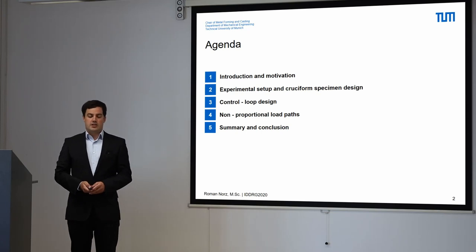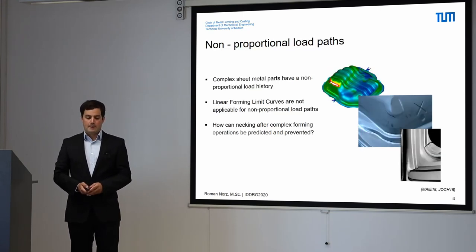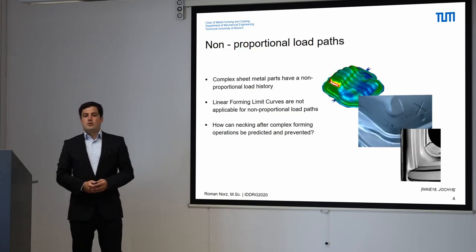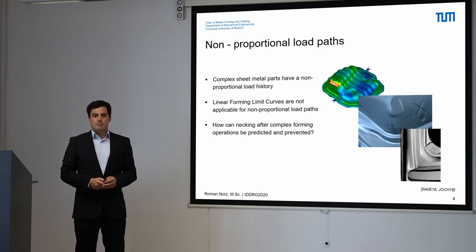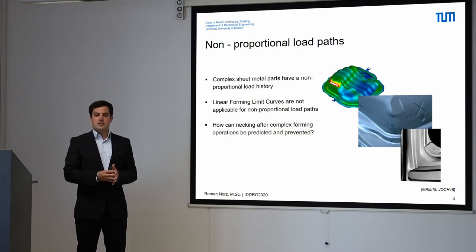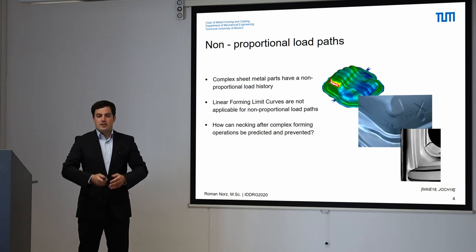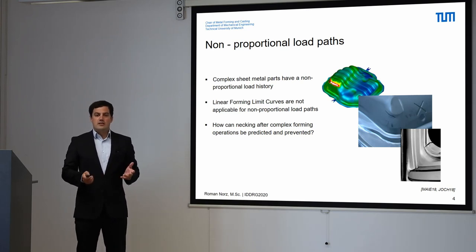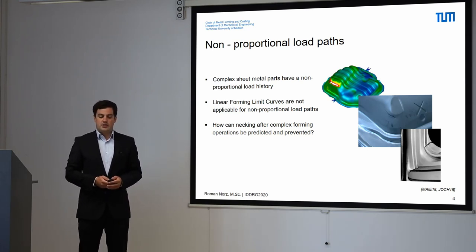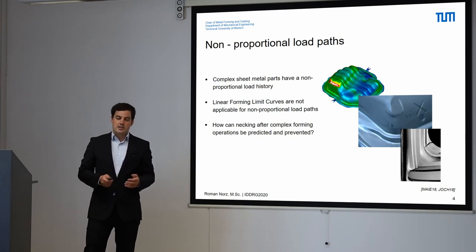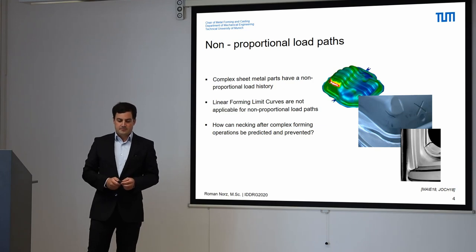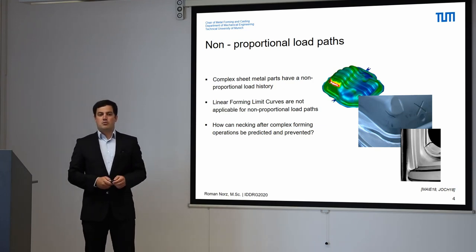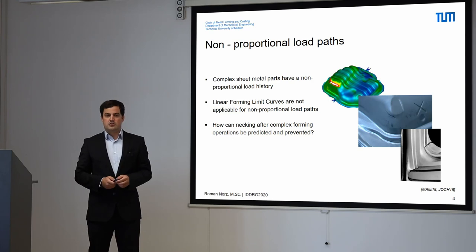Let's begin with the introduction and motivation. As we all know, most sheet metal parts have a complex strain history. That means we do not have a single strain state from the beginning of the forming process until the end. Therefore, a standard linear forming limit curve obtained from a Nakajima test or a Marciniak test is not able to predict necking for those parts. Therefore, we have a big problem, especially for industrial sheet metal parts.